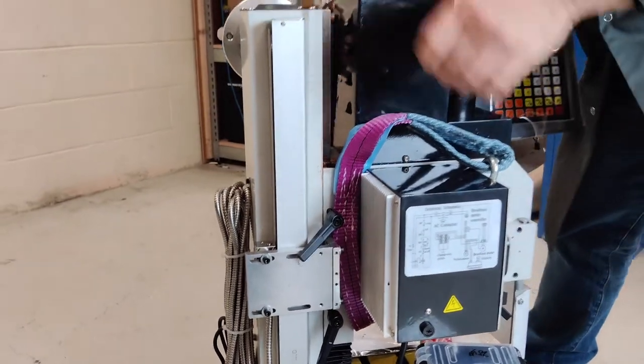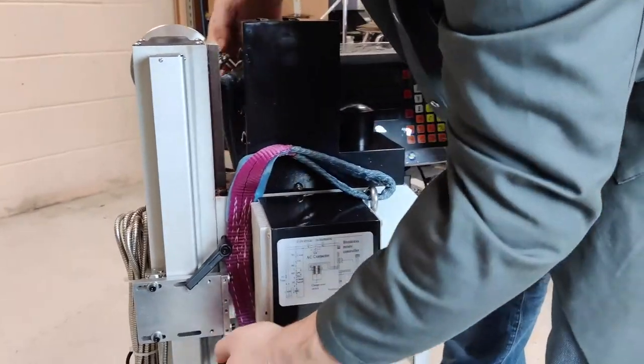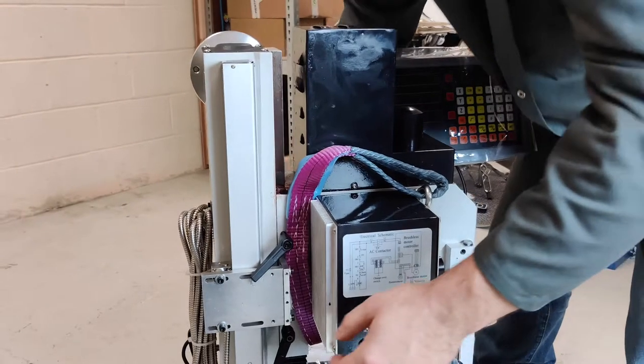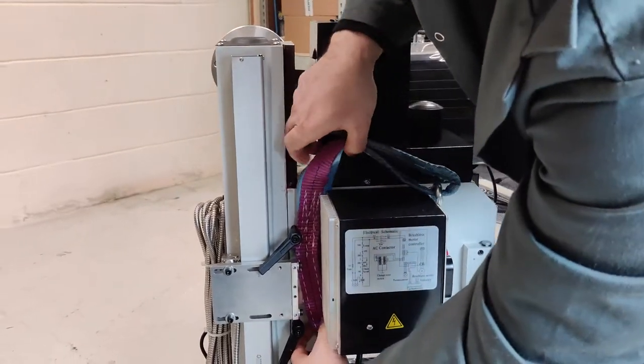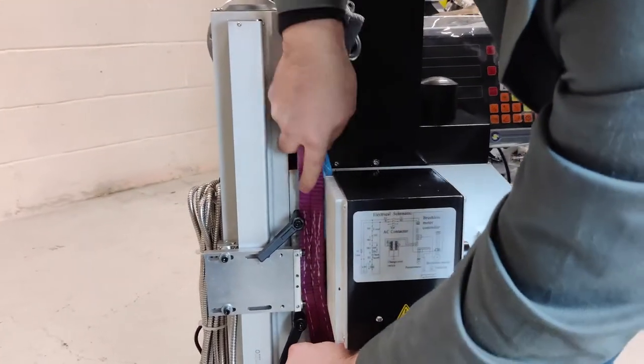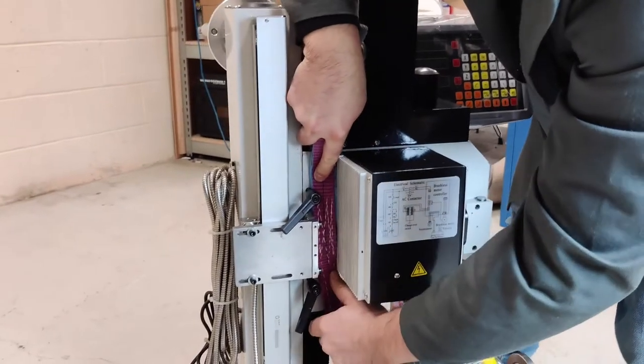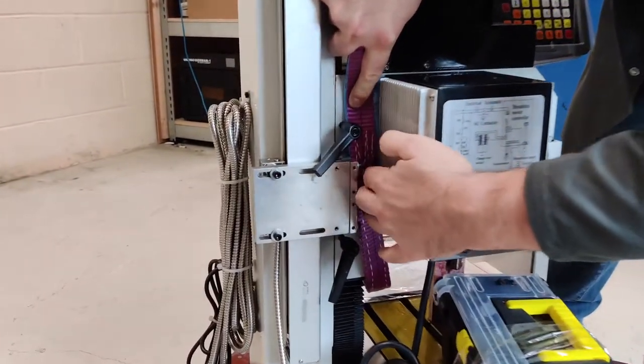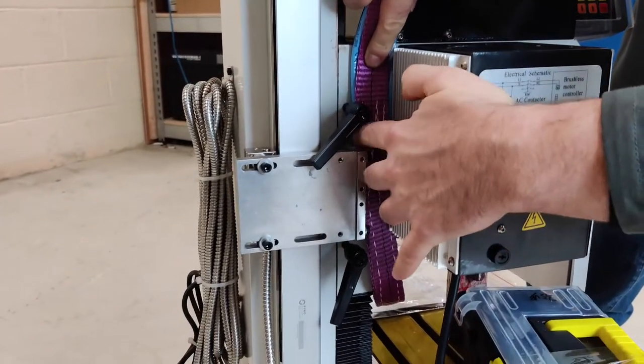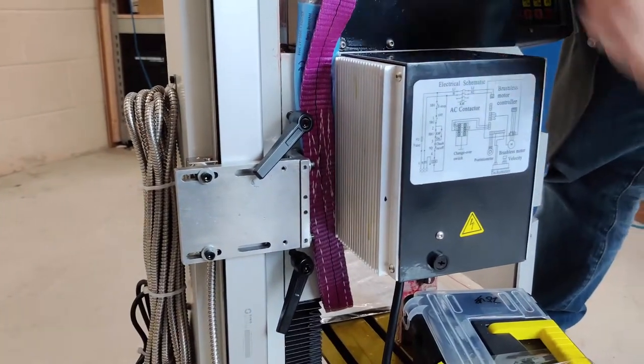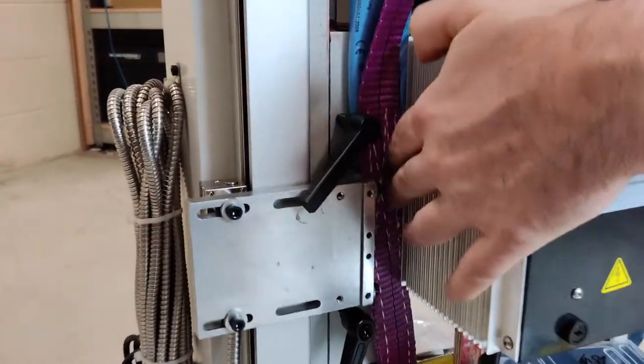When we lift it, we want to make sure that the strap doesn't bend any of the ribs behind the electronics box. So I'm feeding the strap in as far in as I can behind it.